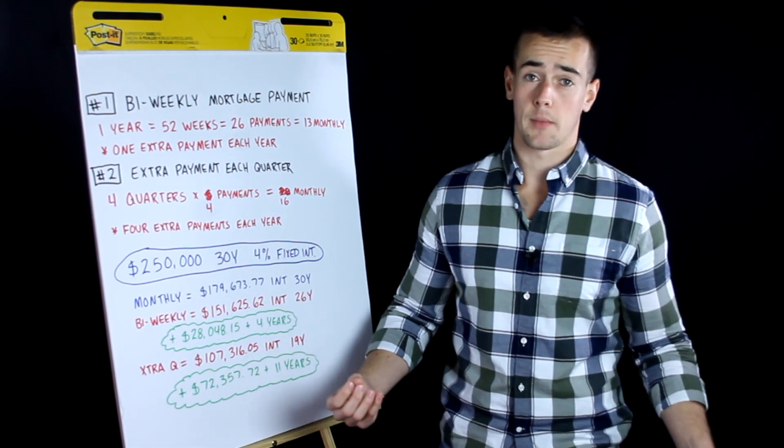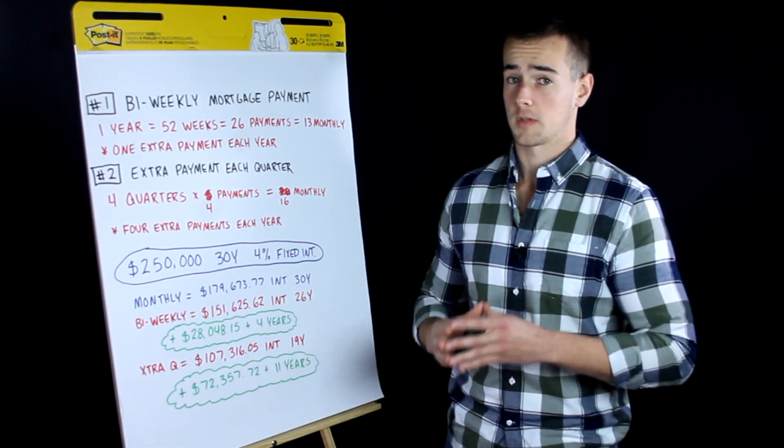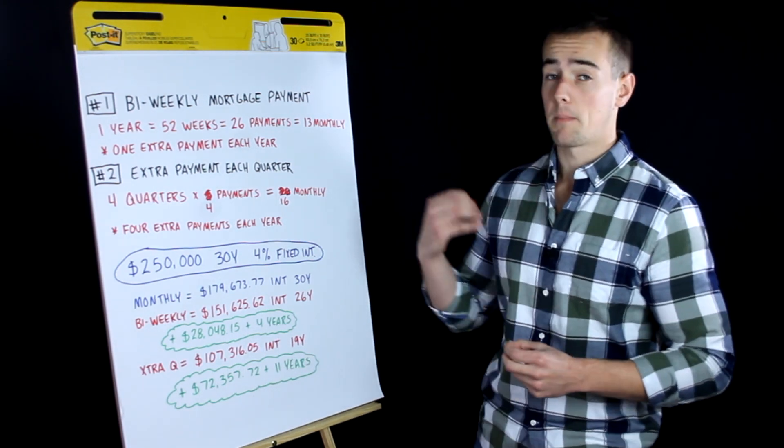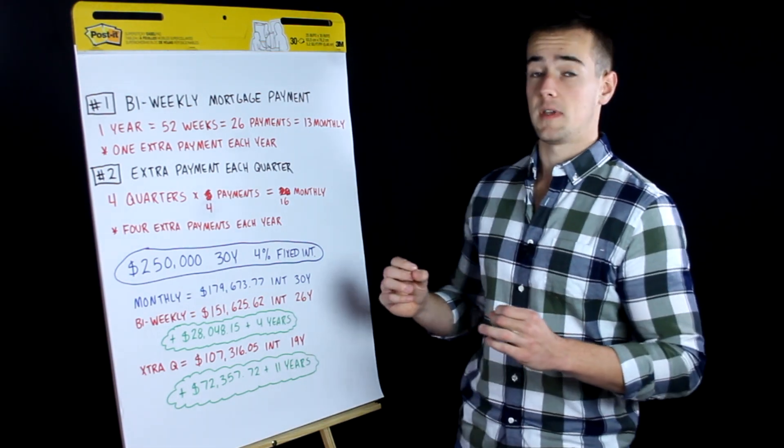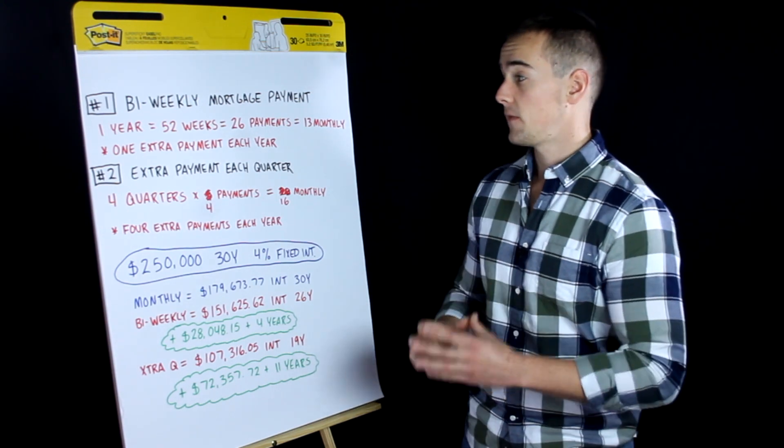So the first strategy is actually pretty common. I would be surprised if you've never heard of this before. But this is where you're making bi-weekly mortgage payments instead of paying them each month. Now the reason you do this is because in one year there are fifty-two weeks.